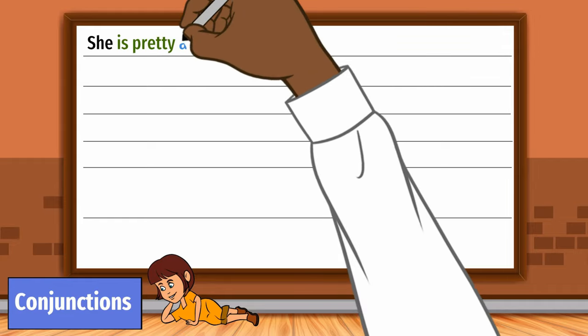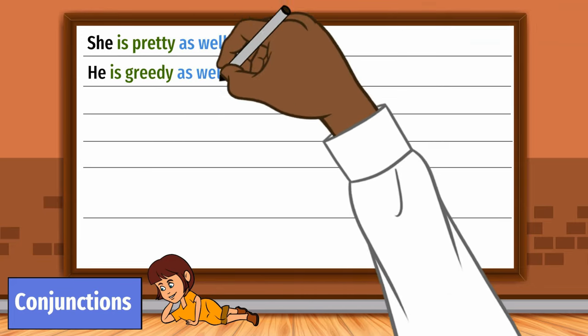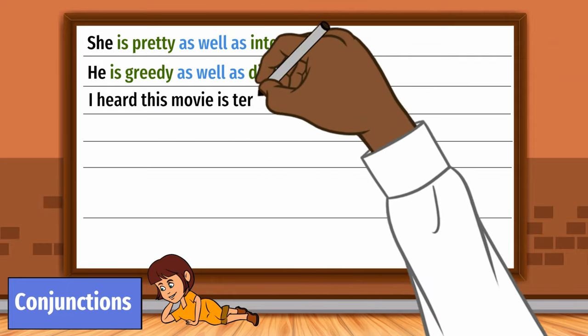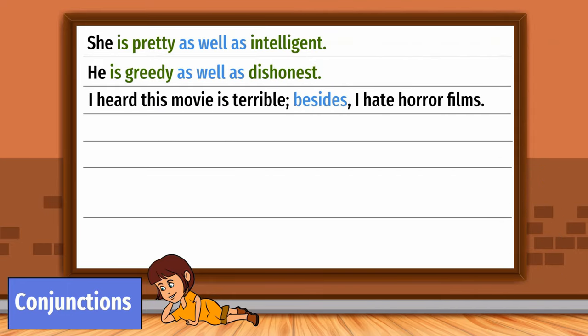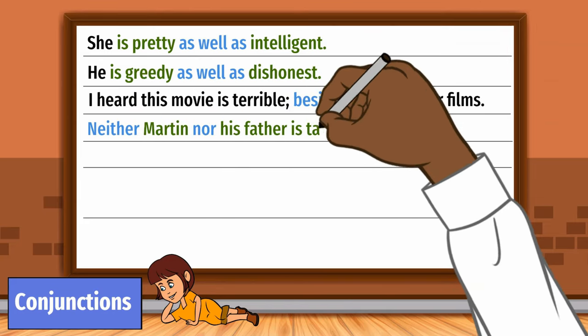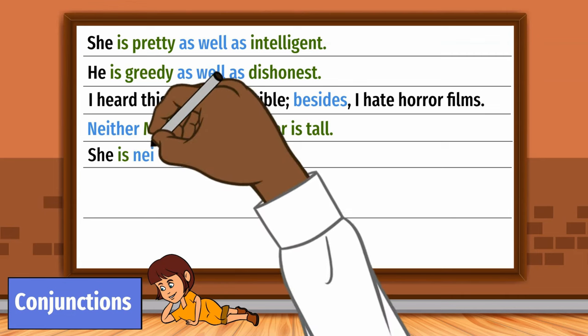She is pretty as well as intelligent. He is greedy as well as dishonest. I heard this movie is terrible, besides, I hate horror films. Neither Martin nor his father is tall. She is neither honest nor hardworking.